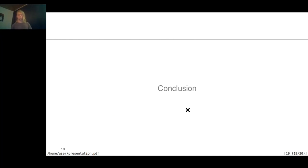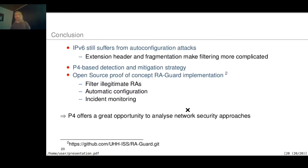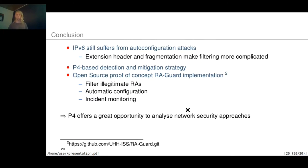In conclusion, IPv6 is still vulnerable to auto-configuration attacks. This is not new — IPv4 was also vulnerable — but IPv6 extension headers and fragmentation make filtering more complicated. To address this problem, we proposed a P4-based detection and mitigation strategy. We published an open-source proof-of-concept implementation of the RA-GUARD approach that is able to filter illegitimate router advertisement packets and provides automatic configuration and incident monitoring. P4 offers a great opportunity to implement network security approaches like this.